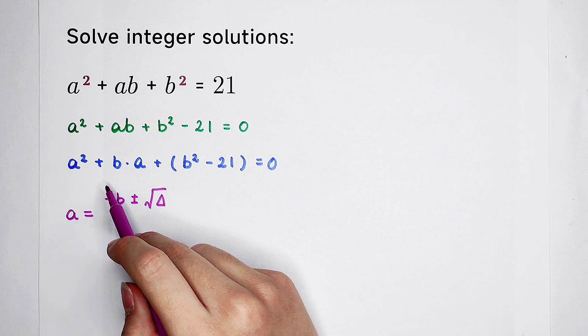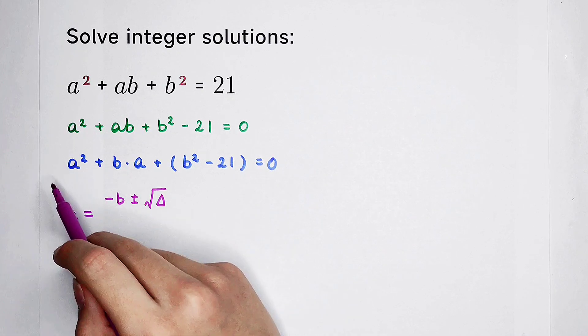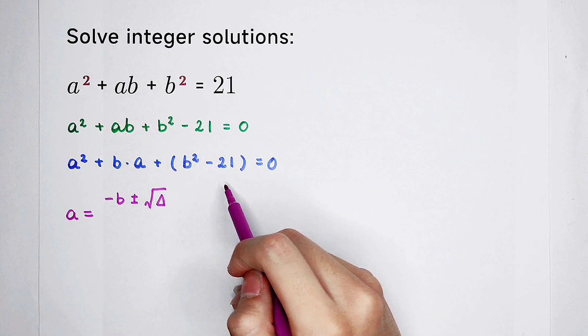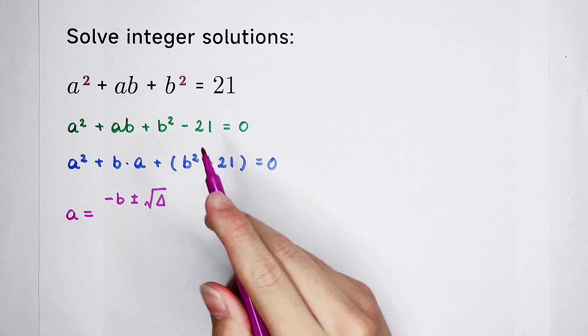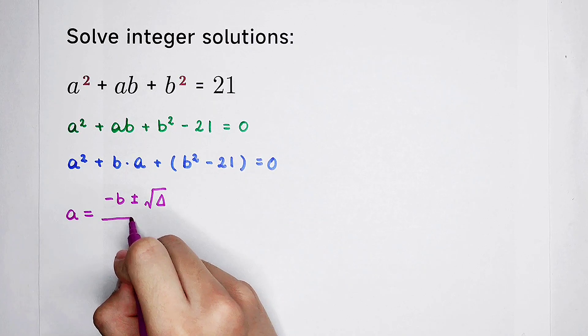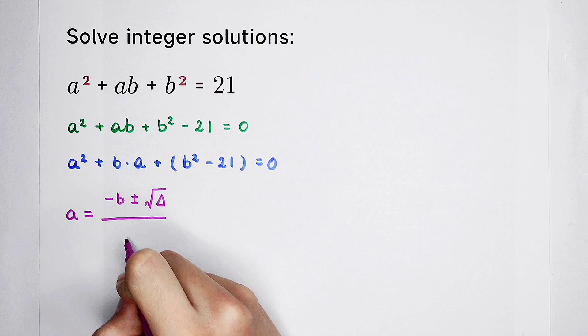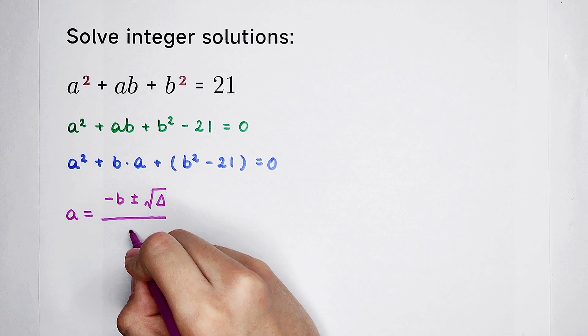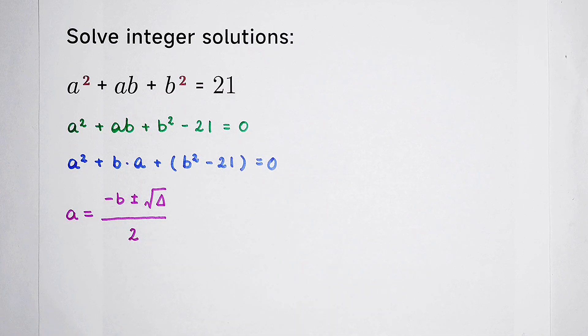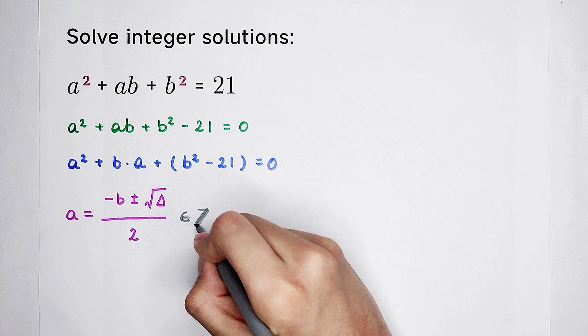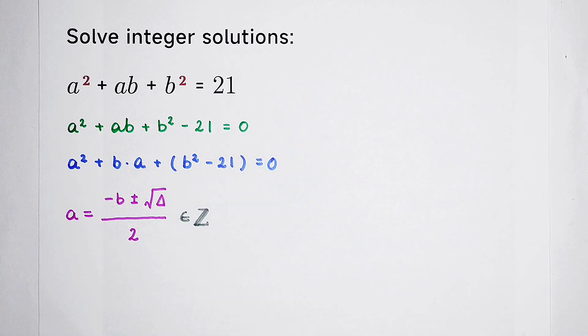This is a numerator. And the denominator is 2 times the coefficient of a squared. So, here is 1. So, we have to write it 2. And we know that a should be an integer.